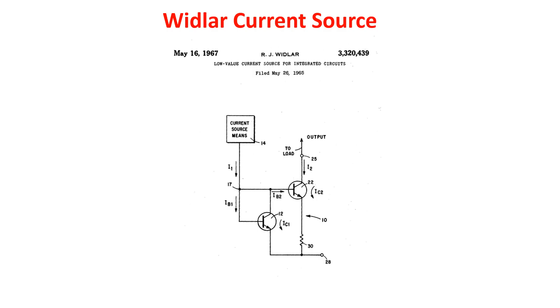One of the first challenges in integrated circuit design was forming a small current in the order of microamps because of the relatively large resistor value usually required. However, with this circuit, taken from the Widlar patent of 1967, it's possible to create a current source with the output in the tens of microamps, using resistances of only a few kilohms.